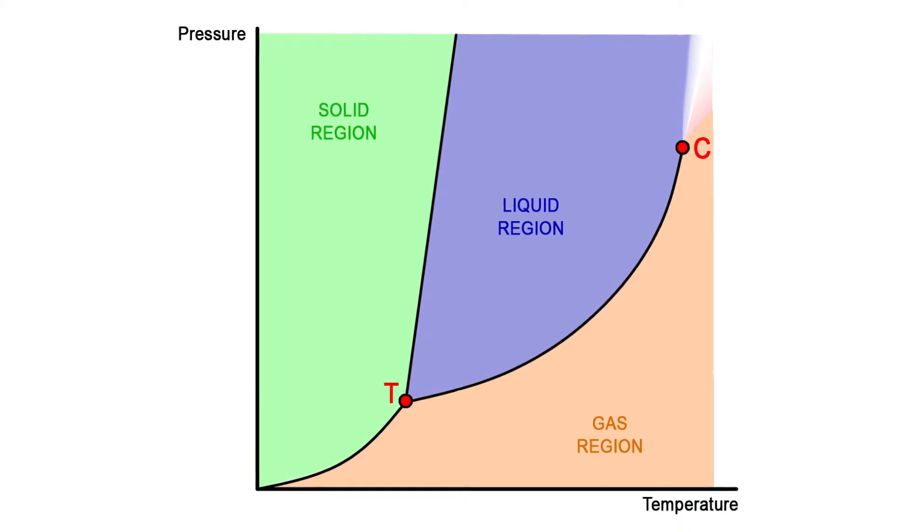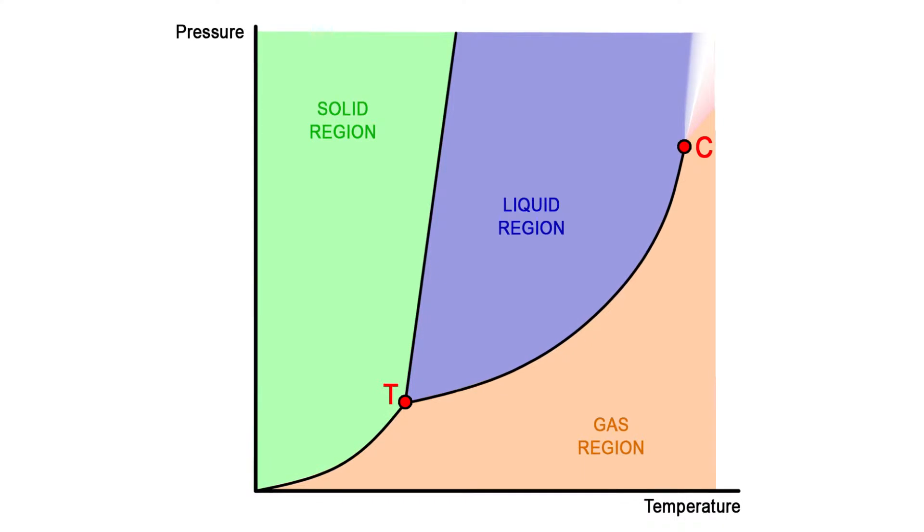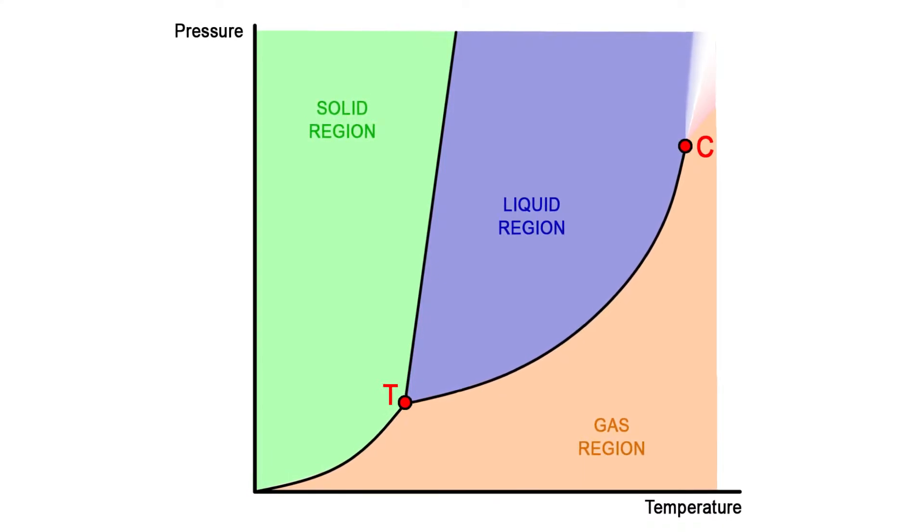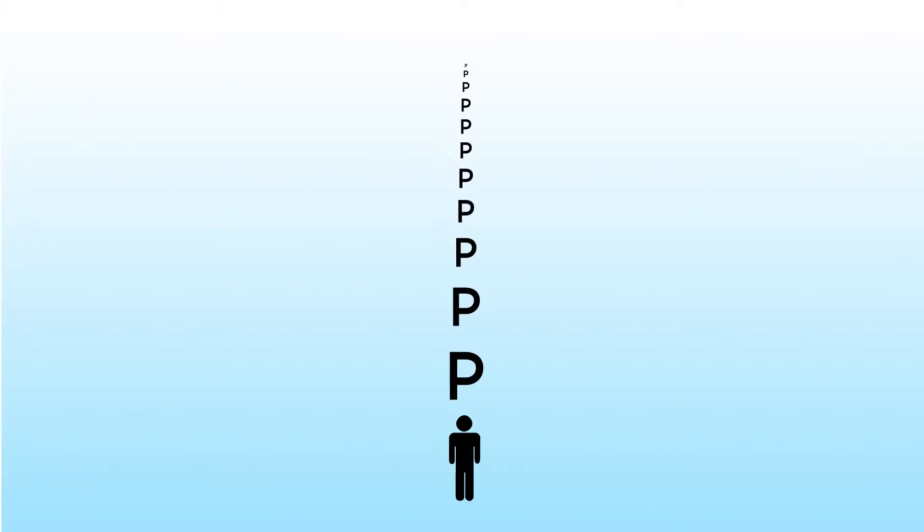For this reason, liquids are somewhat rare in astronomy. They only occur when an atmosphere is present to create pressure. Pressure is created by the weight of the gases that are above you.